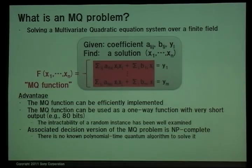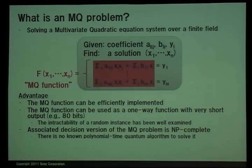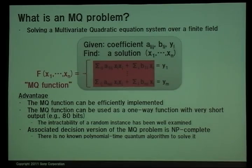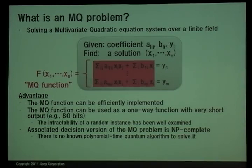This problem is very promising for cryptography because of the following three advantages. First, the MQ function can be efficiently implemented. Second, the MQ function can be used as a one-way function with very short output — for example, only 80 bits. The intractability of a random instance has been well examined for a long time. Finally, the associated decision version of the MQ problem is NP-complete. In fact, there is no polynomial-time quantum algorithm to solve it, in contrast to factoring or discrete log.